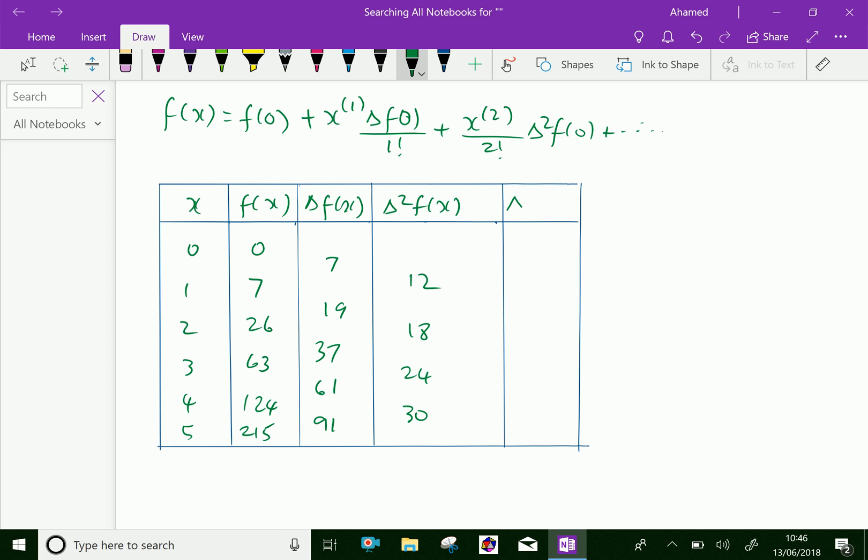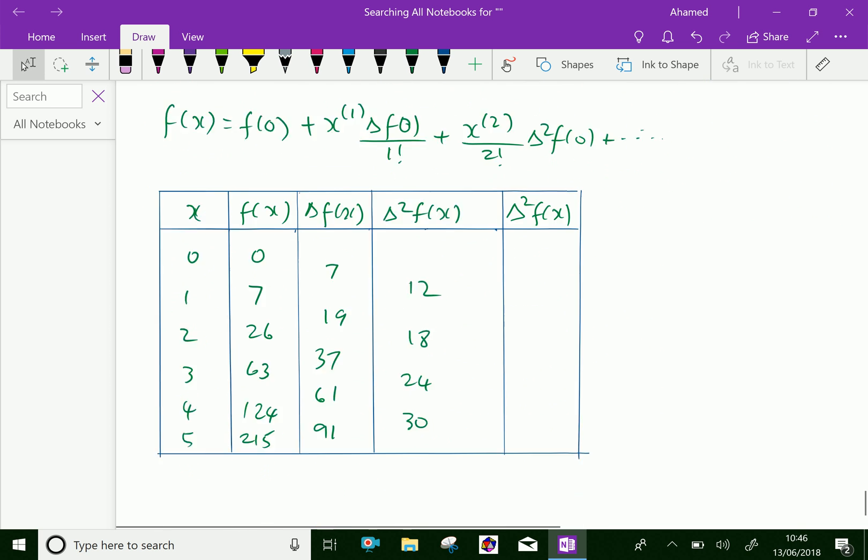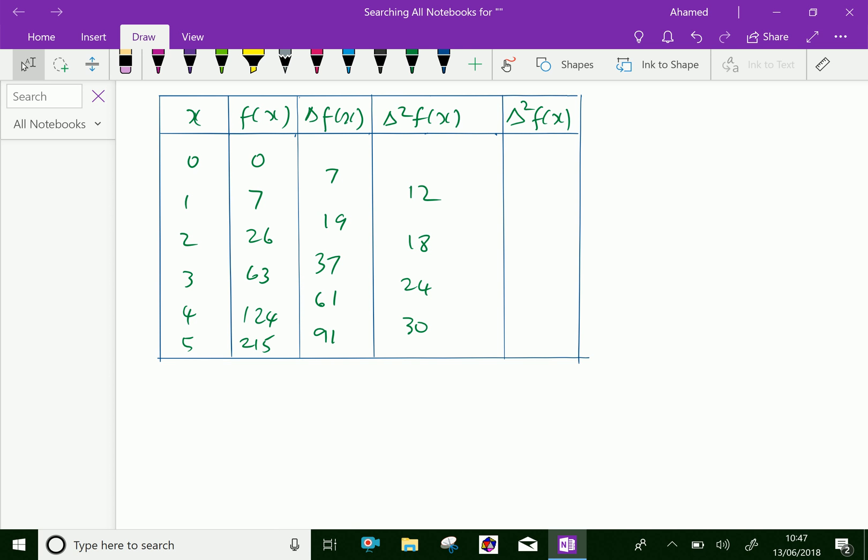Then third difference delta cube f of x equal 18 minus 12 is 6, 24 minus 18 is 6 and 30 minus 24 is 6. Now let us see the fourth difference. Here fourth difference all become zeros. Delta 4 f of x, 6 minus 6 is zero and zeros. Now we can stop it.